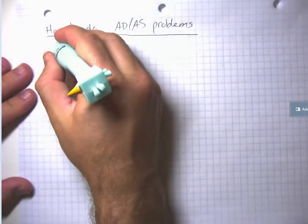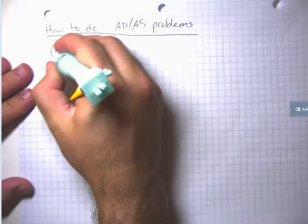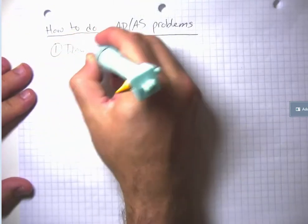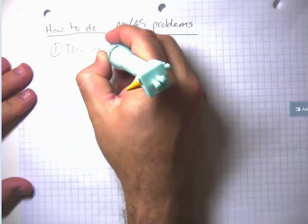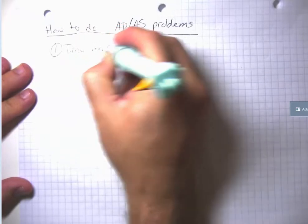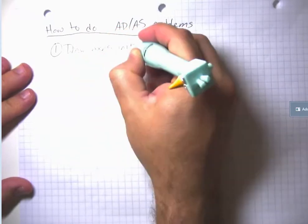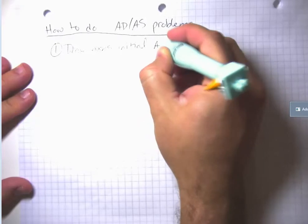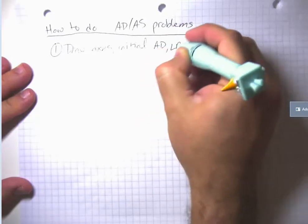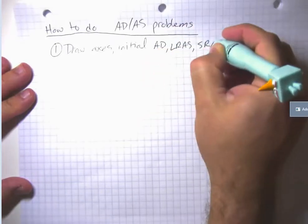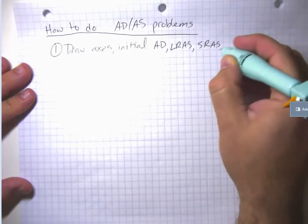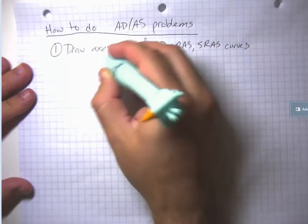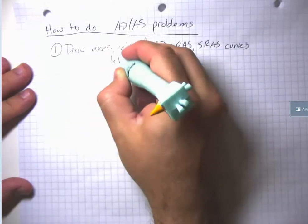The first thing to do is draw your axes and initial aggregate demand, long-run aggregate supply, and short-run aggregate supply curves, and label all those things. Label the axes, label the curves.